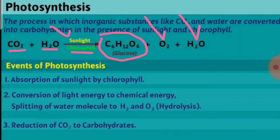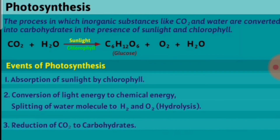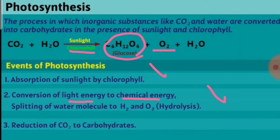The events of photosynthesis are: first, absorption of sunlight by chlorophyll — the chlorophyll pigment absorbs sunlight. The second event is converting light energy into chemical energy, where light energy from the sun is converted into chemical energy, and glucose is formed along with the byproduct oxygen.